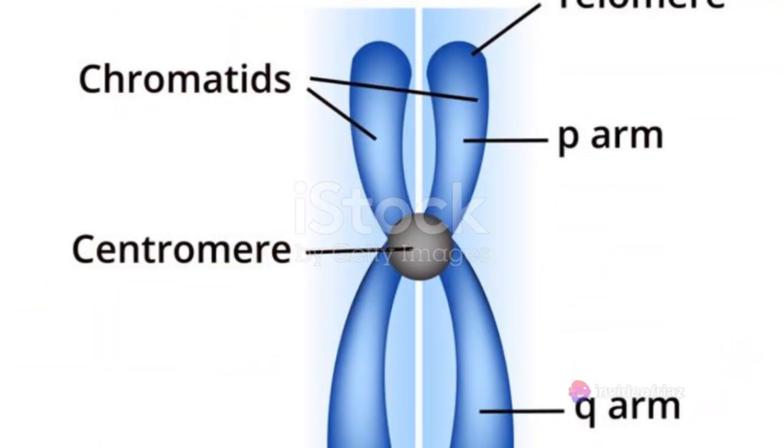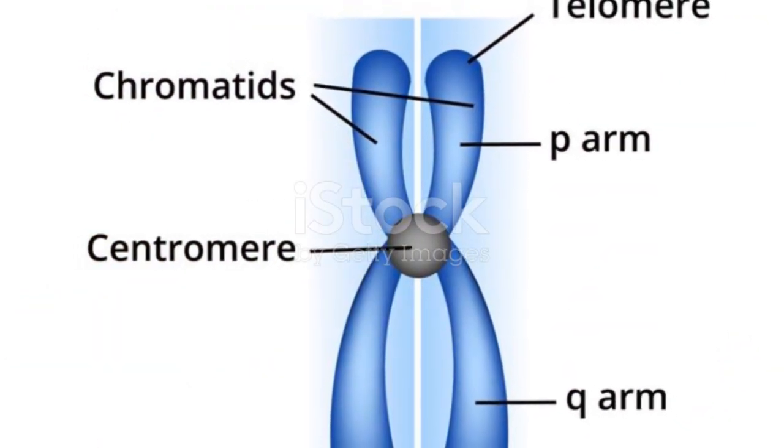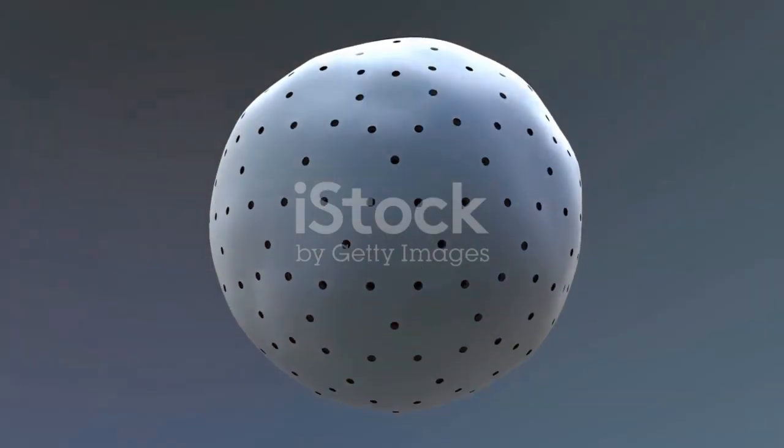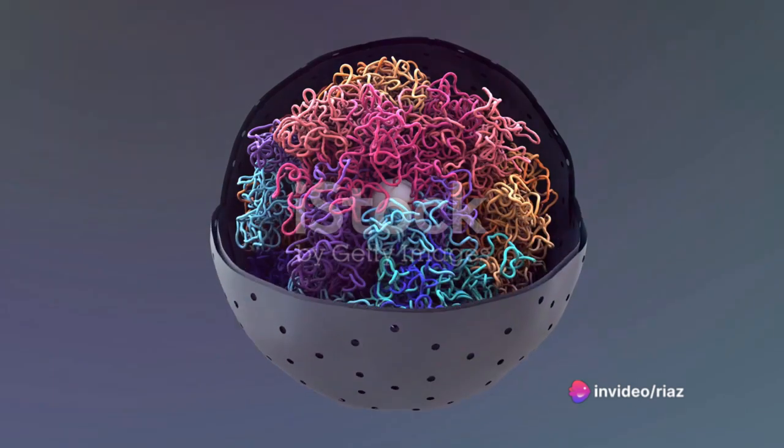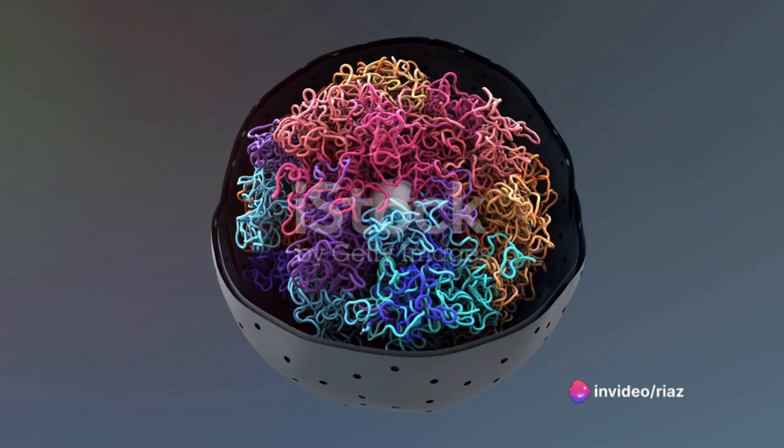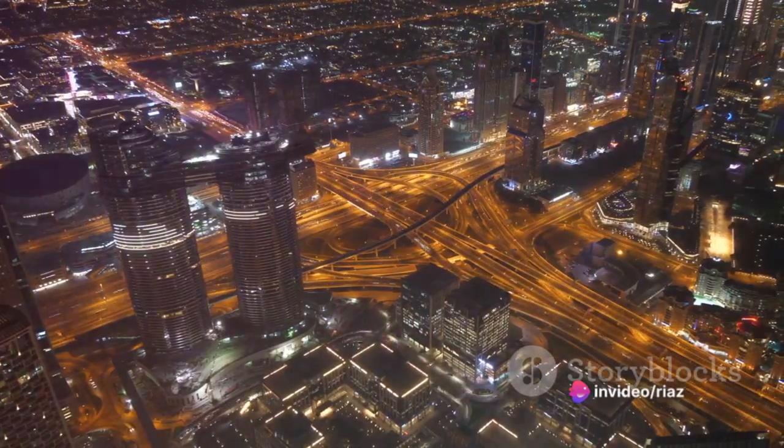Imagine a city bustling with activity, where each building represents a cell. Inside each building, there's a control room, the nucleus, and within it, we find the blueprints that define the city's structure and function: the chromosomes.